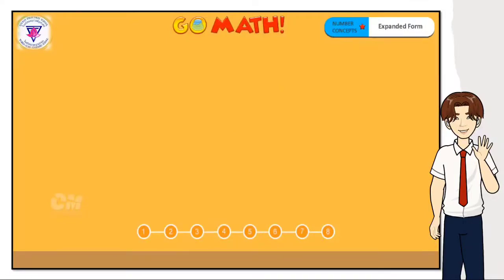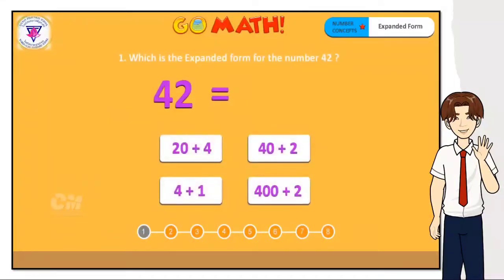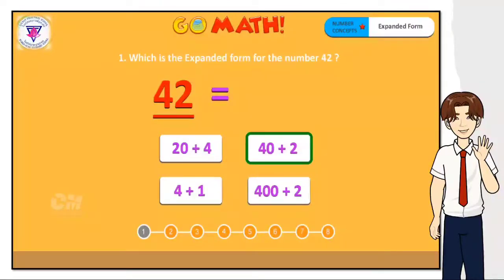Go Math — Expanded Form. Which is the expanded form for the number 42? The digit 4 is in the tens place, so the value of 4 is 40. The digit 2 is in the ones place, so the value of 2 is 2. Together, the expanded form for the number 42 is 40 plus 2. You are right — the correct answer is 40 plus 2.